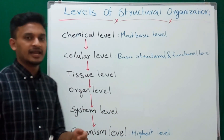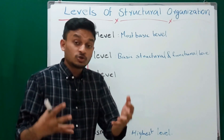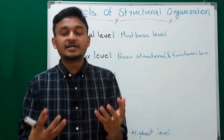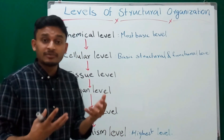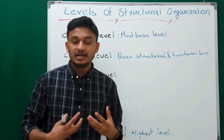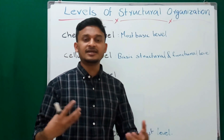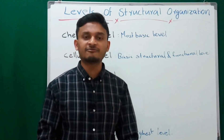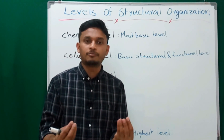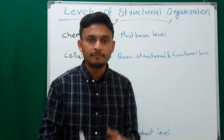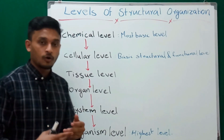At the organ level, different tissues are combined together to perform a particular function. Examples of organs are the heart, lungs, and kidney. These organs are made by combining different types of tissues together so that they can perform a particular function.